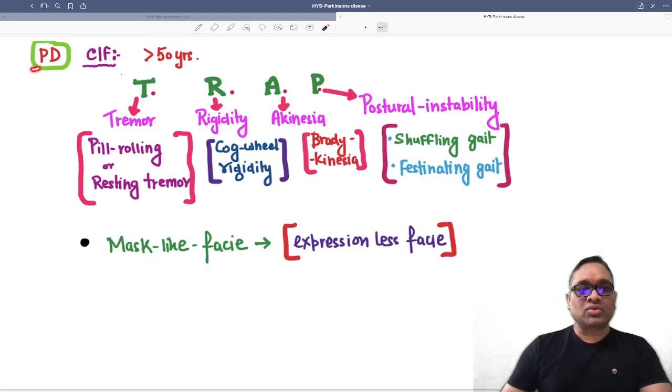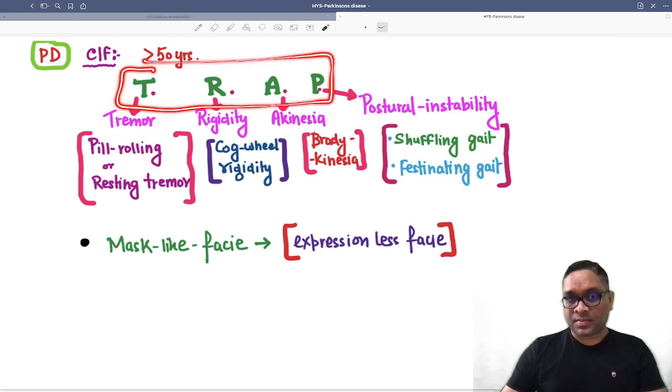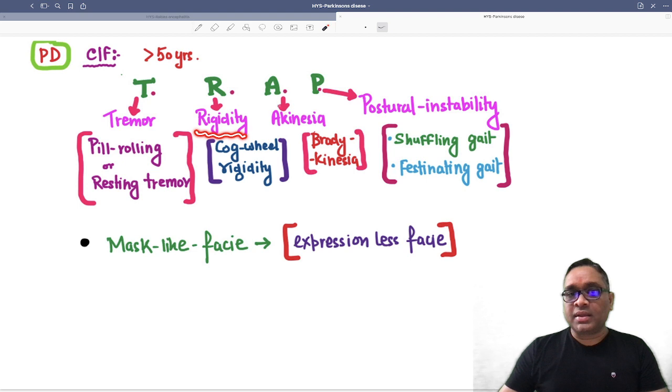Hello everyone. In this short, I'm going to tell you about Parkinson's disease, whose clinical features start after 50 years of age, so older age groups are affected. This will be remembered by the mnemonic TRAP, where T stands for tremor, R is rigidity, A is akinesia, and P is postural instability.